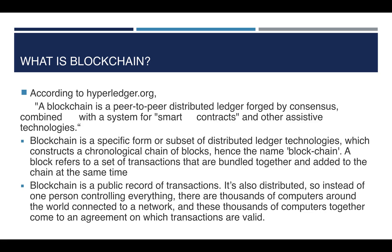Now let us understand the definition of blockchain given by hyperledger.org. A blockchain is a peer-to-peer distributed ledger forged by consensus, combined with a system for smart contracts and other assistive technologies. What does that mean? A peer-to-peer distributed ledger means it doesn't have to deal with a single server — it is peer-to-peer, with no single central authority. All transaction data of the system will be available with each peer, as we saw in the decentralized model.